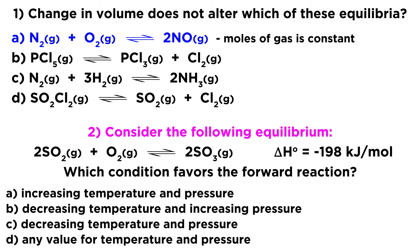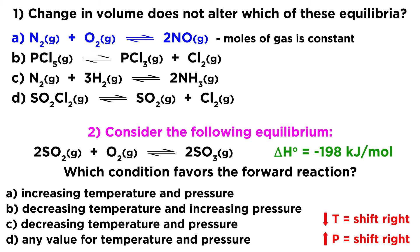Looking at number two — we have thermochemical data showing this is an exothermic reaction, which means it is producing heat. We can consider heat to be a product on the right side. If we lower the temperature, meaning we're removing heat from the product's side, that is going to shift this equilibrium to the right. Likewise, if we increase the pressure, that is also going to shift this to the right, because we have three moles of gas particles on the left and two on the right. So lowering temperature and raising pressure are the two conditions that shift the equilibrium forward — that is option B. That's a little bit of practice regarding gaseous equilibria.